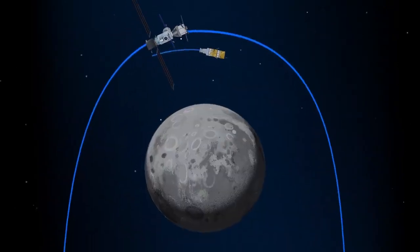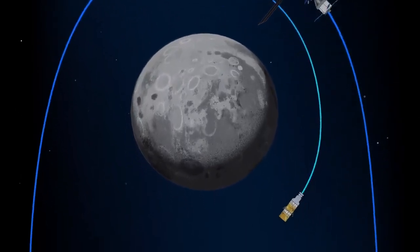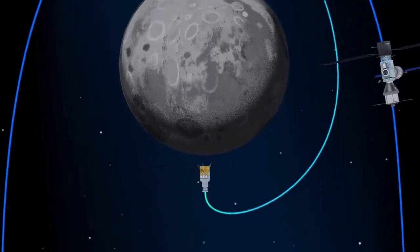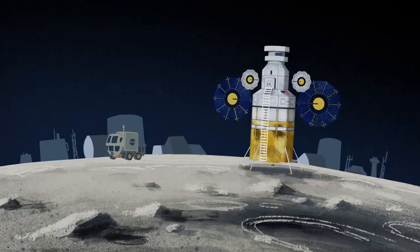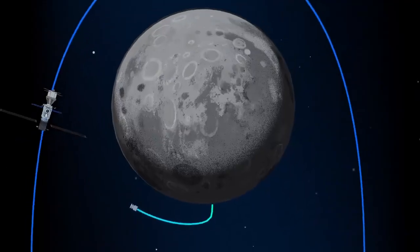The lunar lander system itself is built for three unique steps. Descending from the halo orbit of Gateway down to a low lunar orbit, descending from low lunar orbit to the surface, and once the lunar mission is complete, launching from the surface of the Moon and ascending all the way back to the orbiting Gateway.